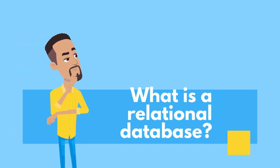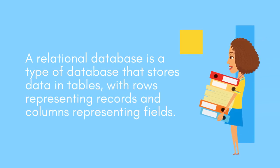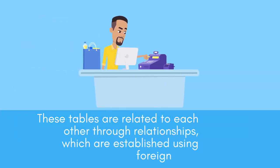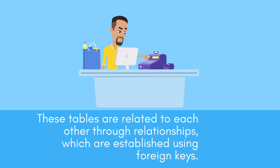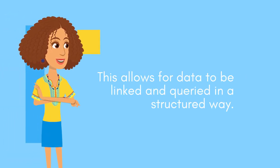A relational database is a type of database that stores data in tables, with rows representing records and columns representing fields. These tables are related to each other through relationships, which are established using foreign keys. This allows for data to be linked and queried in a structured way.